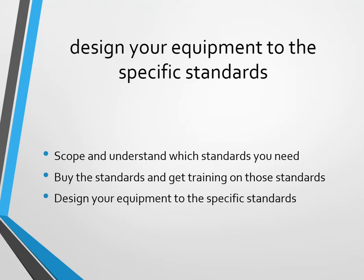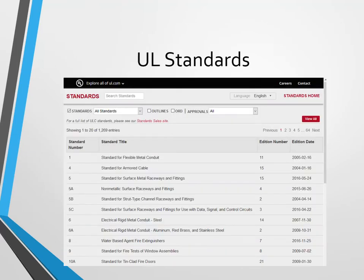Get that training, and then you're going to design your equipment to incorporate the requirements of that standard. Let me show you here how we would go about finding that. One of the ways you would find those standards is to go to the UL standards homepage and then go through there and find all the electrical car charging standards. There's going to be conduit standards, raceways, fittings, and stuff like that. These standards you see on this screen are also going to roll in when you use these subcomponents in your product.